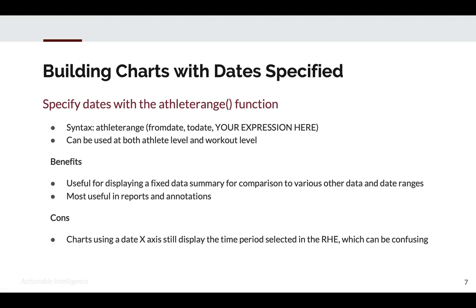Athlete range can be used at both athlete level and workout level, and it's useful for displaying a fixed data summary, especially if you want to compare it to various other data or date ranges. It's especially useful in reports and annotations. One con to be aware of is that when a chart uses a date x-axis, it will always display the time period selected in the right-hand explorer, which can be confusing — but we'll cover that in just a little bit.